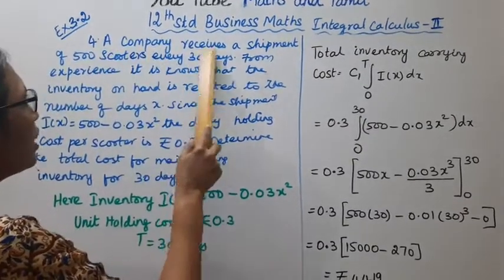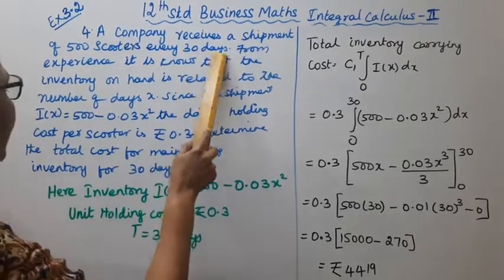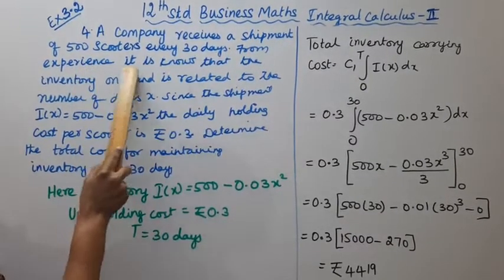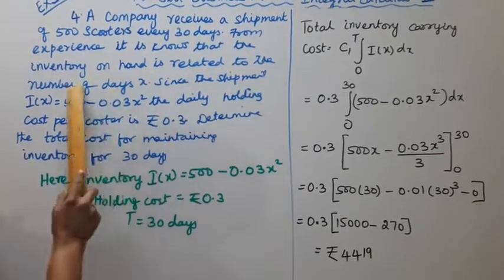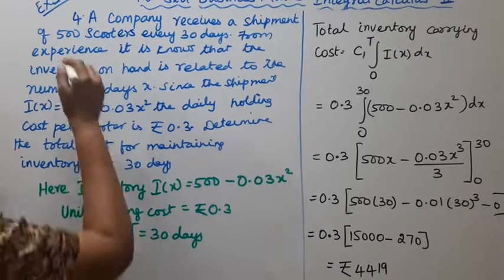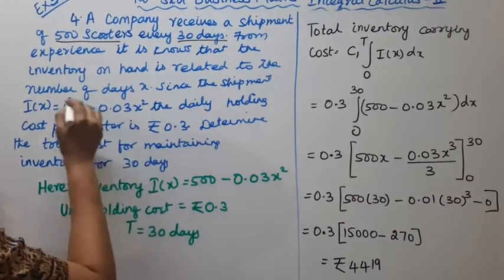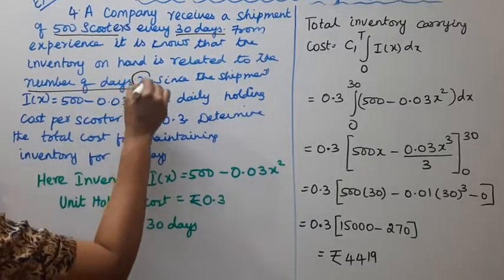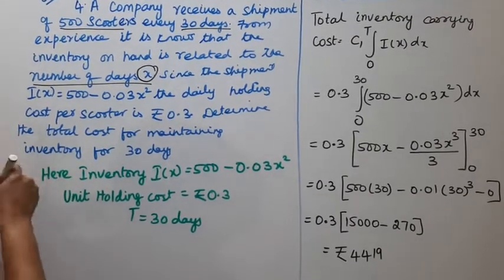A company receives a shipment of 500 scooters every 30 days. From experience, it is known that the inventory on hand is related to the number of days since the shipment. I(x) = 500 - 0.03x².